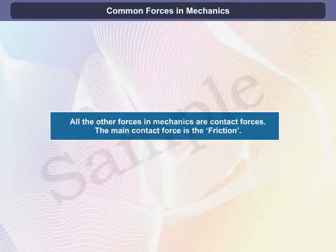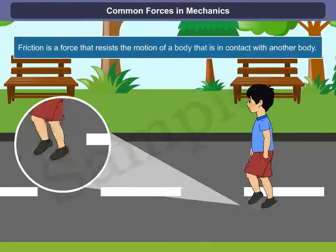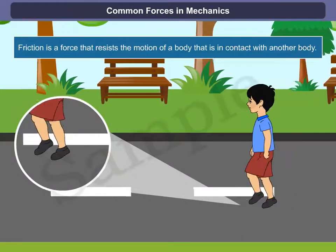All the other forces in mechanics are contact forces. The main contact force is friction. Friction is a force that resists the motion of a body that is in contact with another body.